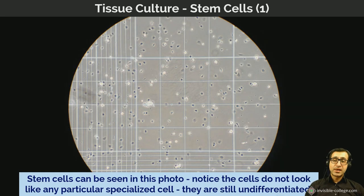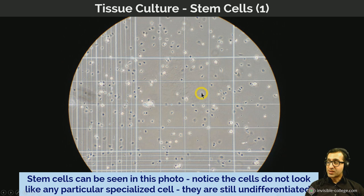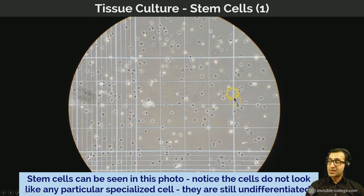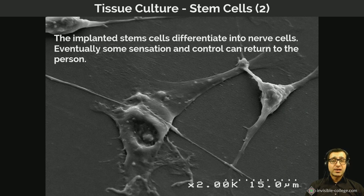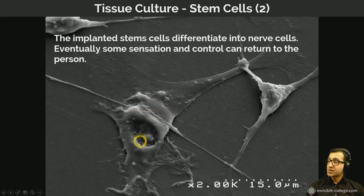Stem cells can be seen in photographs — they all look alike and don't resemble any particular kind of cell; they are non-descript spherical cells with very few distinguishing features. In contrast, these nerve cells were actually produced by causing stem cells to differentiate by switching on the relevant genes in those stem cells, so that they differentiated to become these specialized nerve cells.